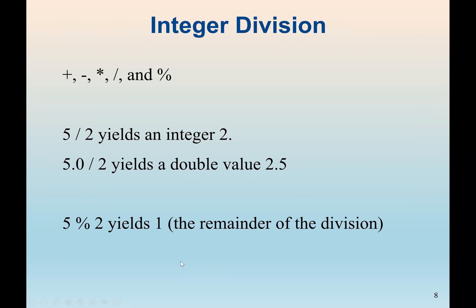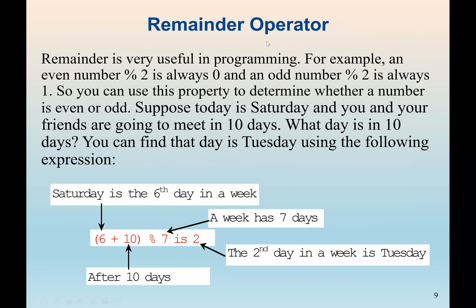The remainder operator is used when we divide two numbers and want to know the remainder. For example, to check if a number is even, we divide by 2 — if the remainder is 0, it's even; if it's 1, it's odd. We use the modulus operator for this: number modulus 2, and check if the answer is 0 or 1.